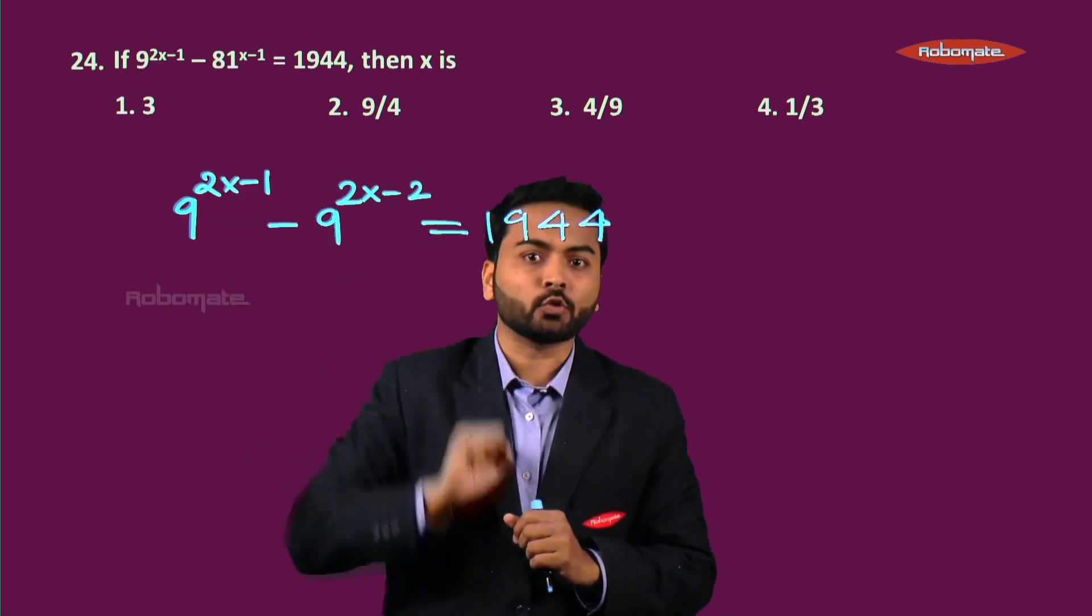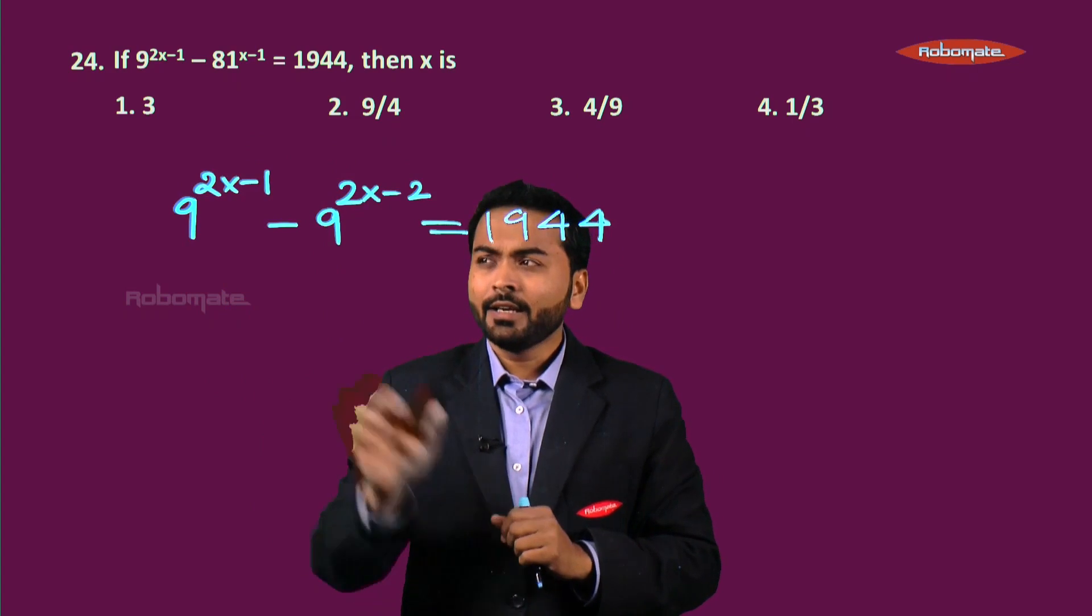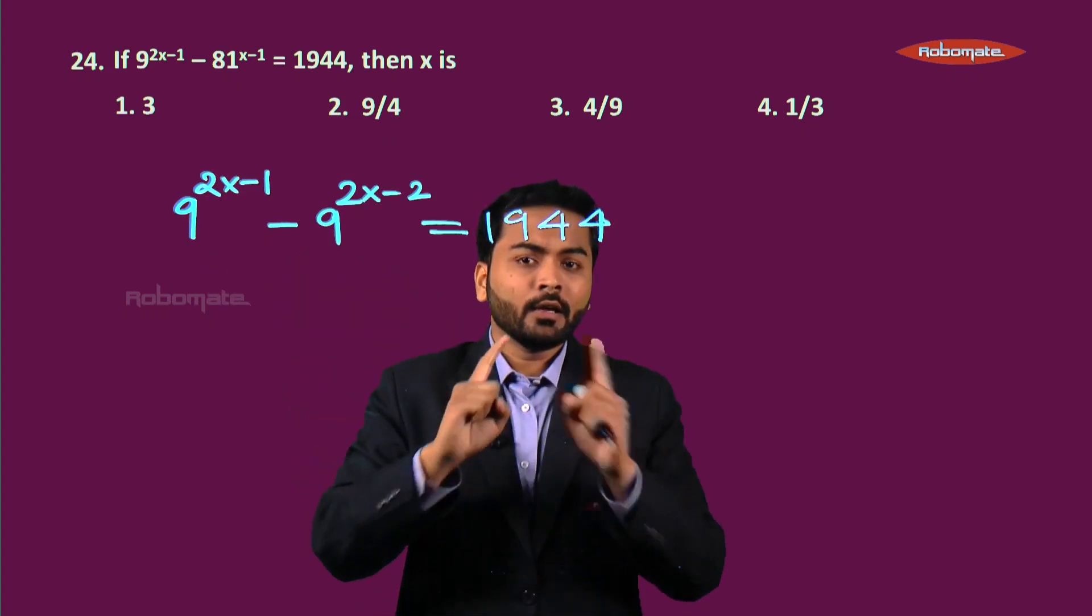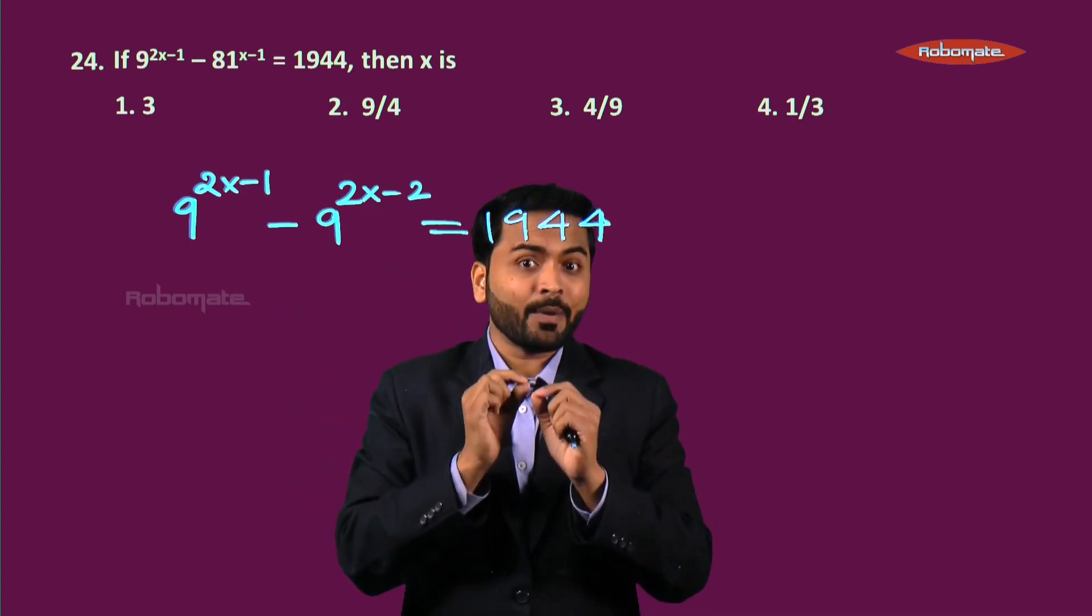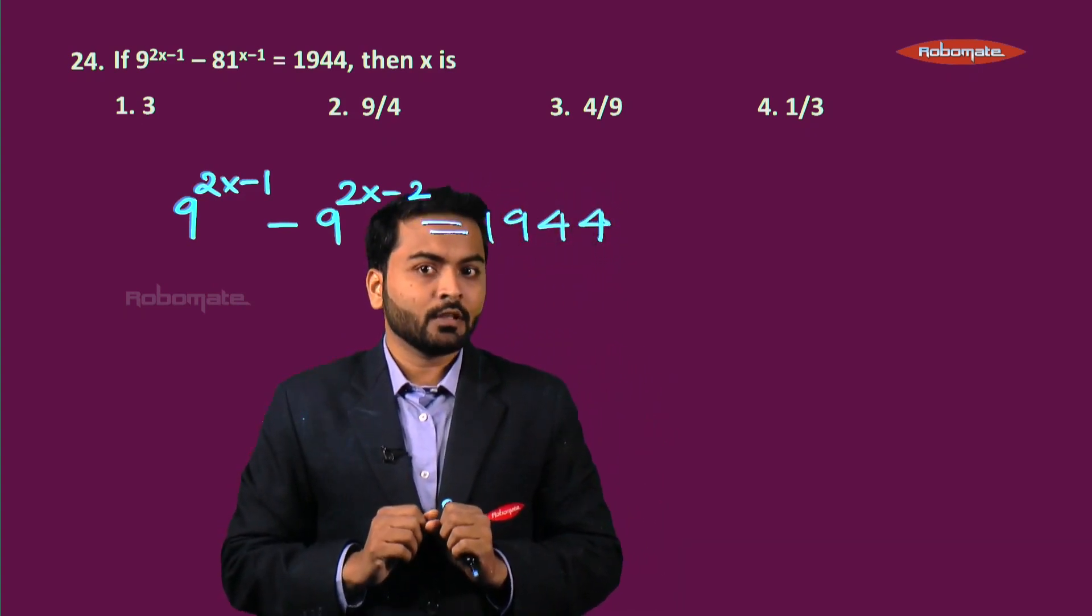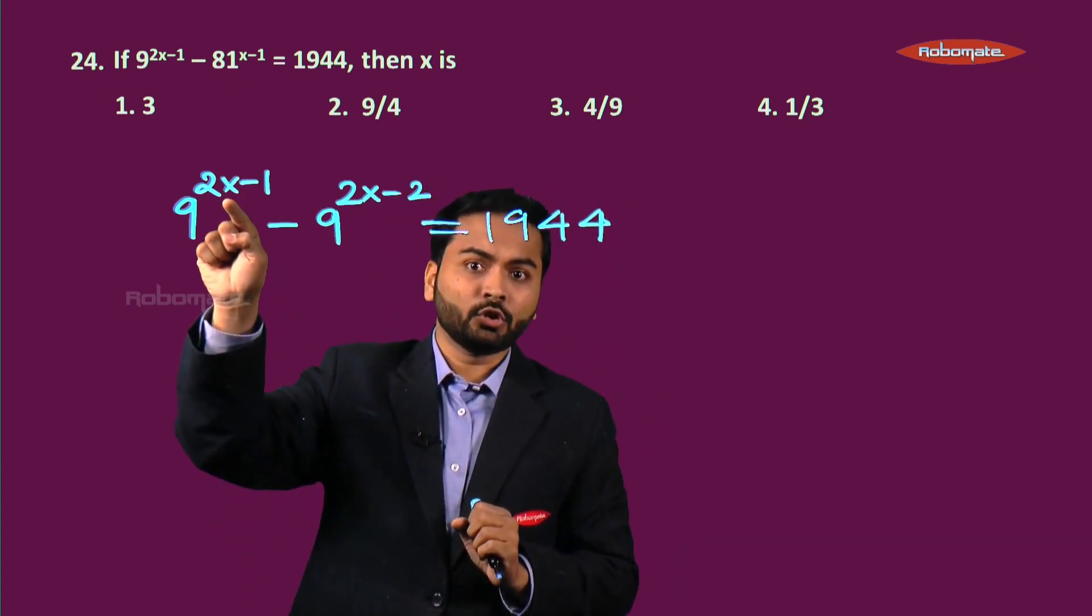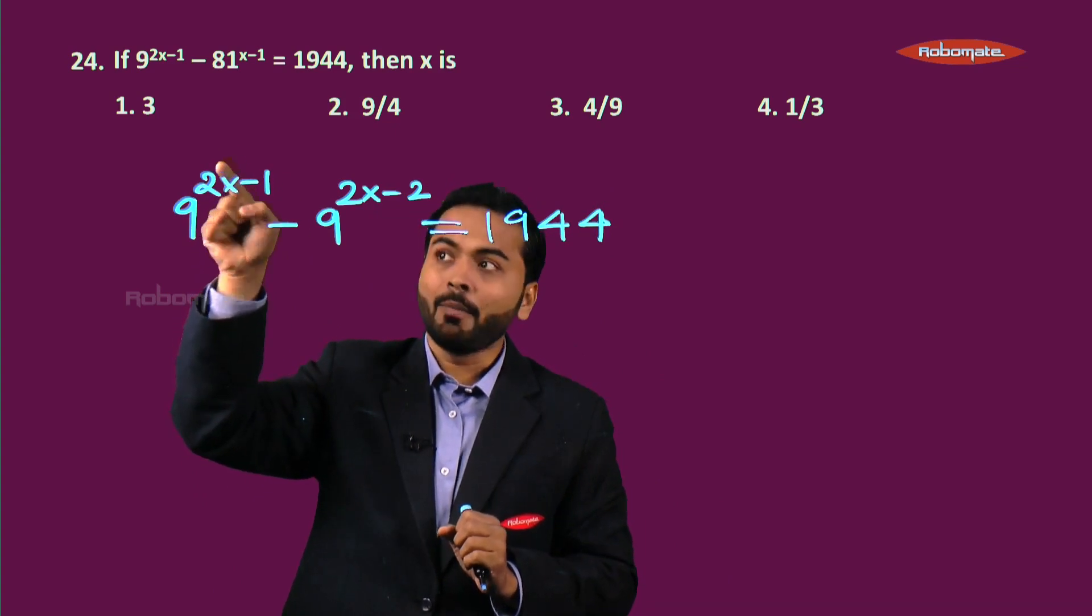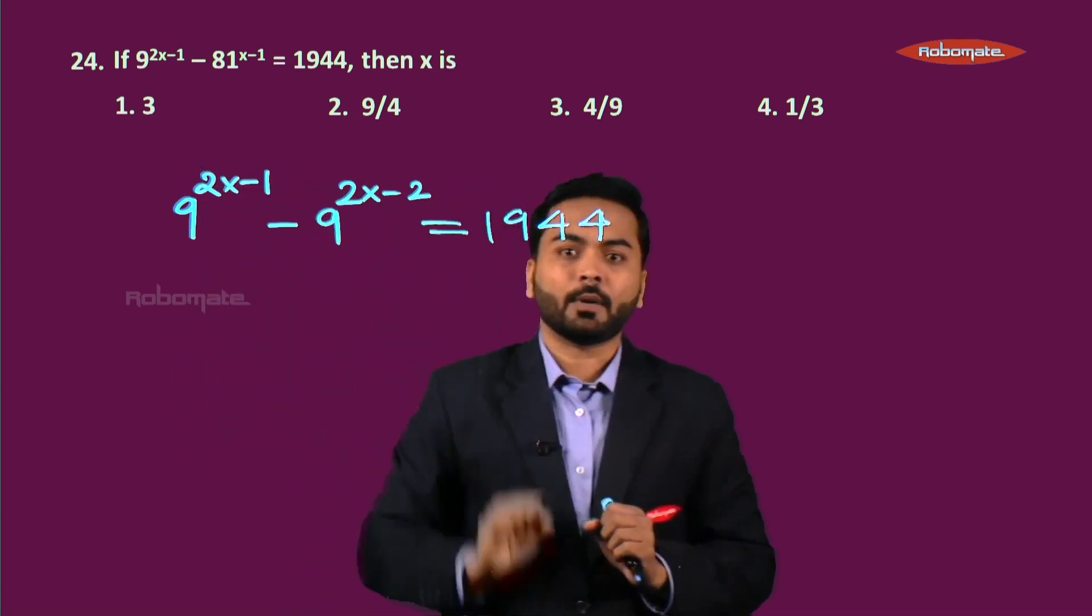9 raised to some power minus 9 raised to some power less than this power, 1 less. So this is y, this is y minus 1. So can I say these two are neighboring powers of 9, consecutive powers of 9. And since this is twice something minus 1, this is an odd power, this is an even power.